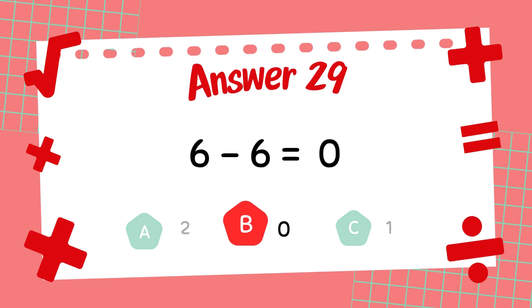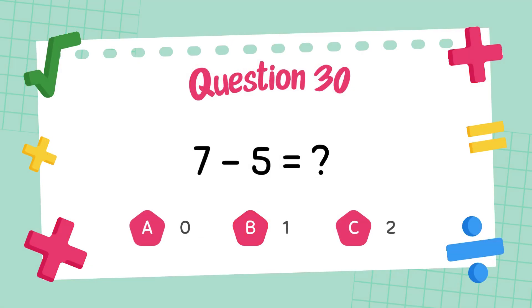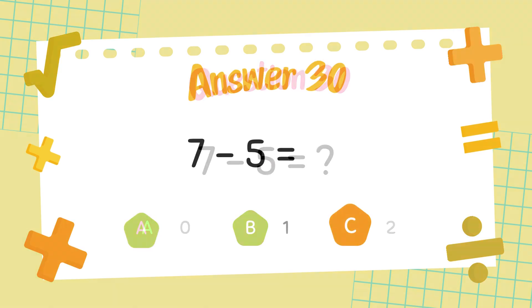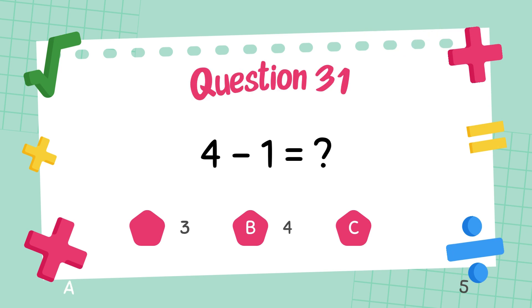The answer is 0. What is 7 minus 5? The answer is 2. What is 7 minus 5?